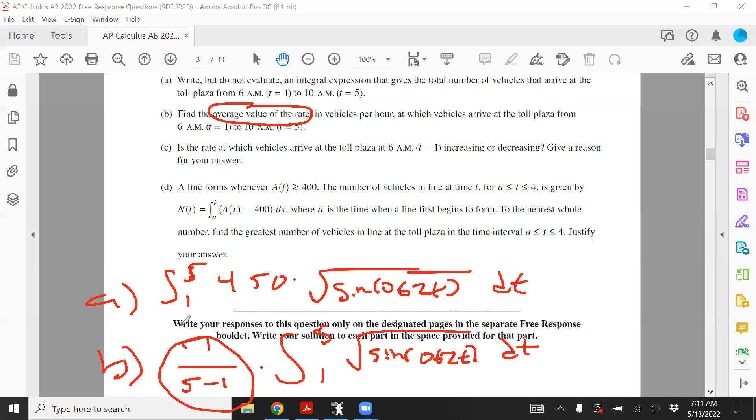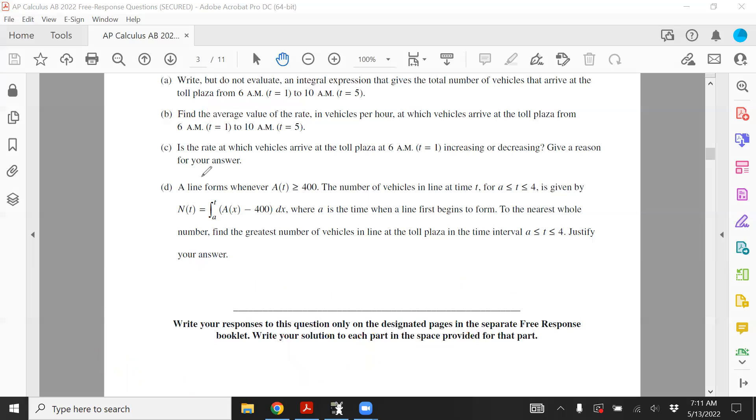Part C requires you to think a little harder. For part C, is the rate at which vehicles arrive at the toll plaza at 6 a.m. increasing or decreasing? So really, they're asking if the rate is increasing, not if the rate is positive or negative, but the rate is increasing. So what it's really asking for is A'(T). Kind of like a second derivative, because if the number of cars were your original function, then of course A(T) is the derivative of the number of cars. And then this question is asking for the second derivative, but we already have the rate. So you're just doing the derivative of the rate.